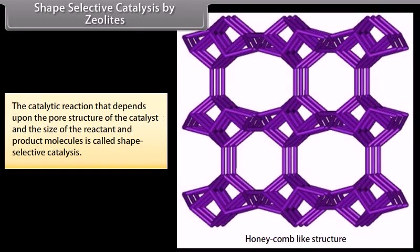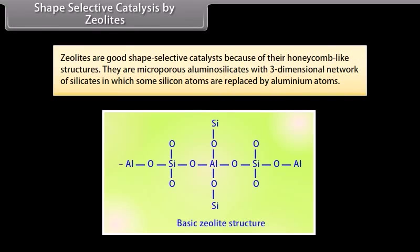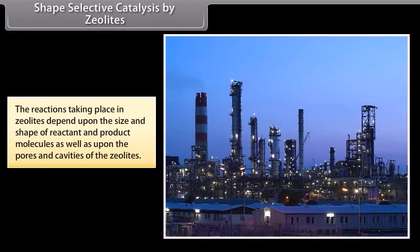Shape selective catalysis by zeolites: Zeolites are good shape selective catalysts because of their honeycomb-like structures. They are microporous aluminosilicates with a three-dimensional network of silicates in which some silicon atoms are replaced by aluminum atoms. The reactions taking place in zeolites depend upon the size and shape of reactant and product molecules as well as upon the pores and cavities of the zeolites. Zeolites are used as catalysts in petrochemical industries for cracking of hydrocarbons and isomerization.